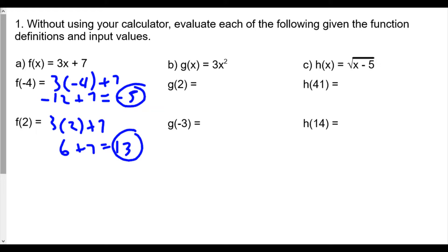We continue with g of x which is 3x squared. So g of 2 would be 3 times 2 squared, which is 3 times 4, or 12. And for g of negative 3, that would be 3 times negative 3 squared, which is 3 times positive 9 because negative 3 times negative 3 is positive 9, or 27.